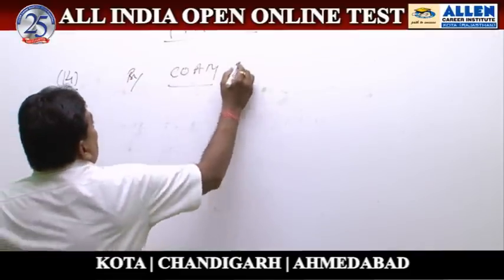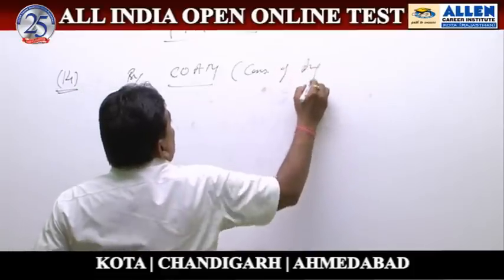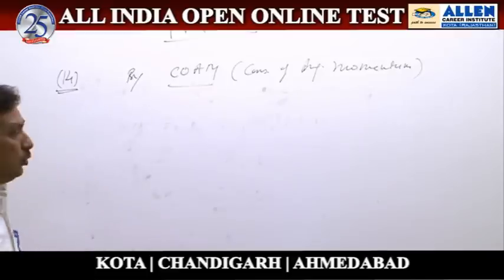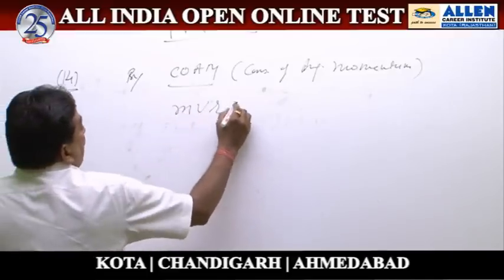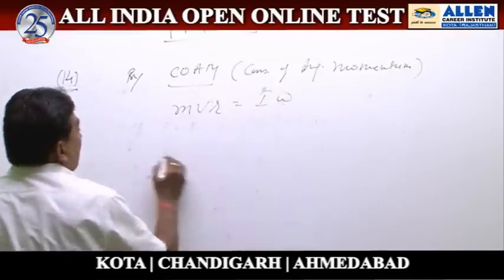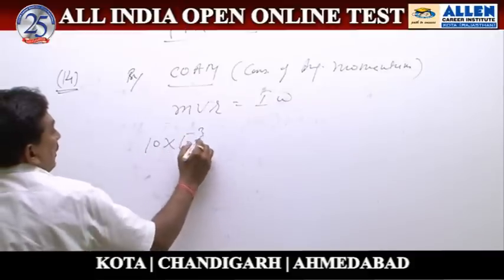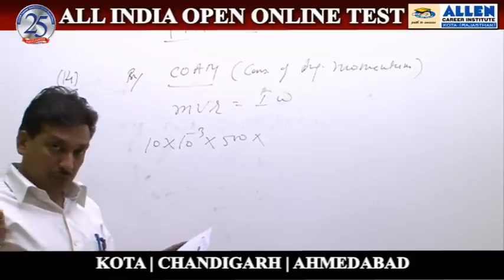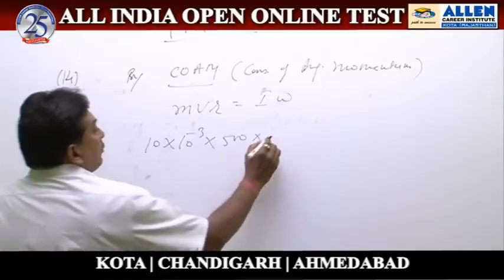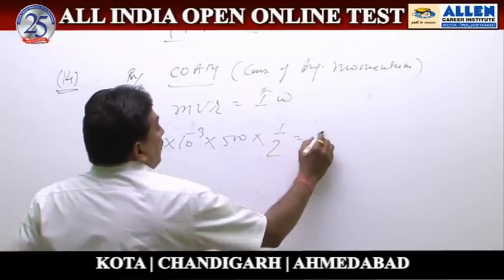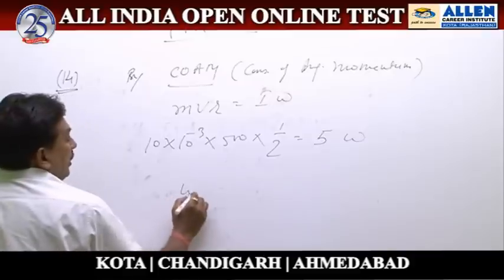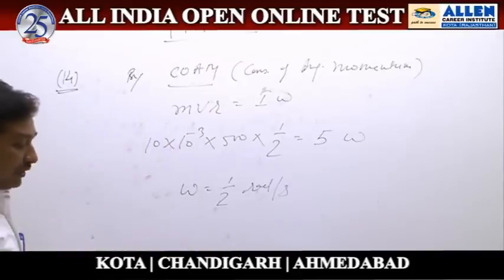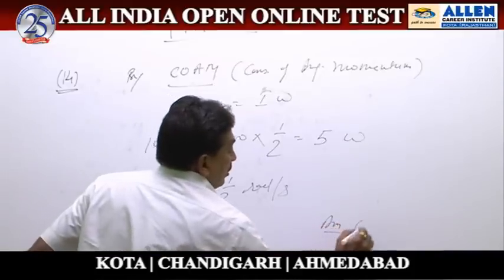we can write m v r = I omega. Mass is 10 grams, so 10 × 10⁻³ × 500 × r, where the distance of the bullet from the axis of rotation is 1/2 meter. Moment of inertia is given as 5, and after solving, omega = 1/2 radian per second. So option 2 is the correct answer.